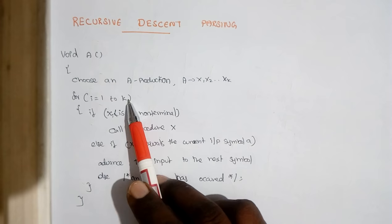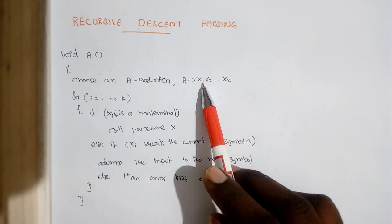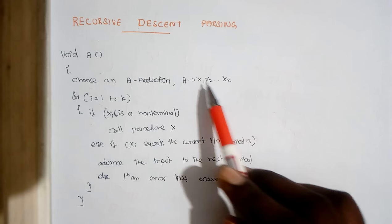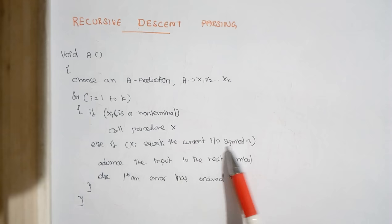If this is a non-terminal, we are going to recursively call the procedure. We substitute the prediction. In case x1 is a terminal symbol and it equals the input symbol, we advance the input symbol. We take the next input symbol and proceed with the same process, else it is an error condition.